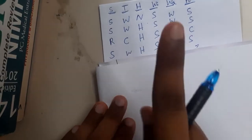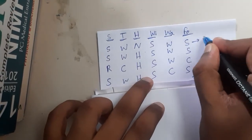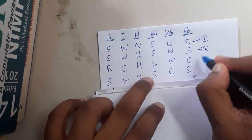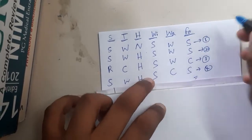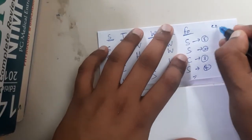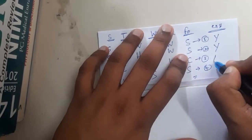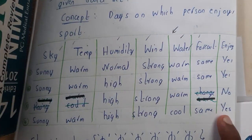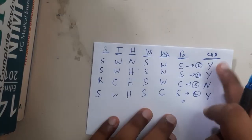Let us start solving. I'll number the rows: row 1, row 2, row 3, row 4. I also need to include the final enjoyment status column — whether they are enjoying the game or not. Row 1 is yes, row 2 is yes, row 3 is no, and row 4 is yes. This last column is given in the question.